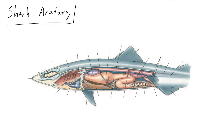What we have in front of us right here is called a male dogfish shark. The first thing we're going to make a note of, to the far left, is something called the rostrum. The rostrum is the very tip of the shark. One of the things you'll make a note of with sharks is that their mouth is very close to their belly.